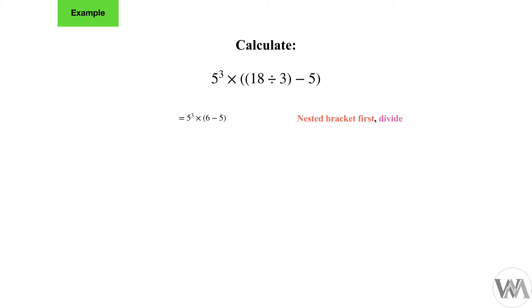Now we do the remaining bracket: 6 minus 5 equals 1, finishing the bracket by doing subtraction. Now we have 5 to the power of 3 times 1 — no more brackets — so we move on to exponents. Expanding 5 to the power of 3 gives us 5 times 5 times 5, and then times 1.